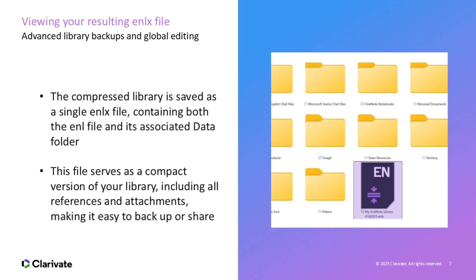You'll now have a compressed version of your library saved and ready for backup or sharing. After completing the compression, your EndNote library is saved as a single .enlx file. This file contains both the .enl file, which holds your reference data, and the associated data folder, which contains all the attachments and other files related to your library. This .enlx file is a compact version of your library, making it easy to backup or share with others. With the .enlx file, you've successfully created a portable, easy-to-manage version of your library, ensuring all your data and attachments are preserved.